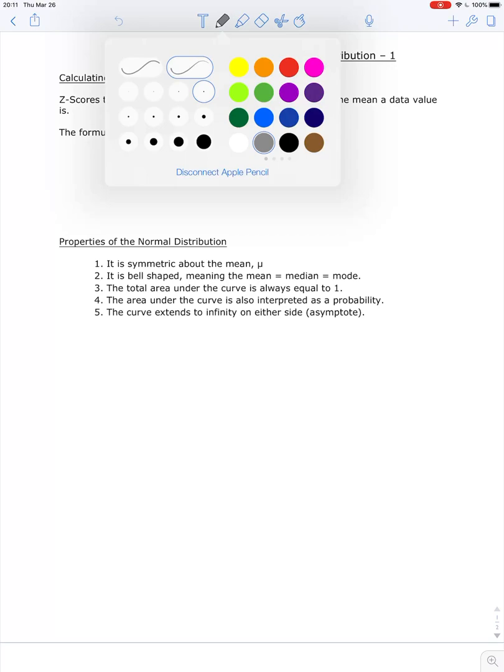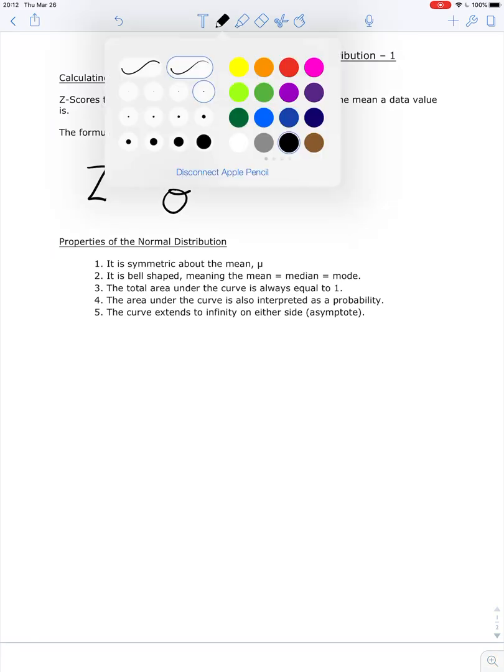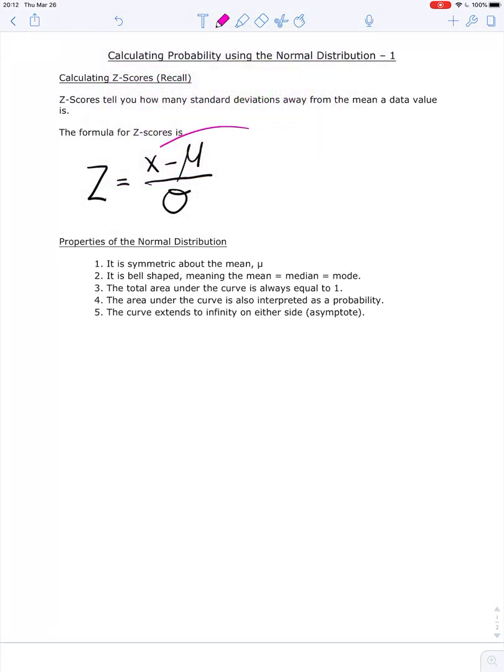And the formula to calculate a z-score is z equals x minus mu divided by sigma. So reminder from before, x represents the data value that we're looking at, mu is the mean, and sigma is the standard deviation.